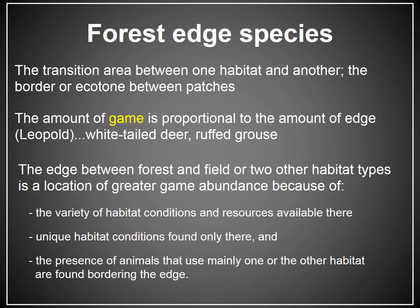Forest edge species rely on the transition between one habitat patch and another, typically between older forests and younger forests. Many of our game species fall into this category, including white-tailed deer and ruffed grouse. Game abundance is greater in these areas because a greater variety of habitat conditions converge in one area, and also because this convergence results in unique habitat features that are only found where habitat patches overlap.